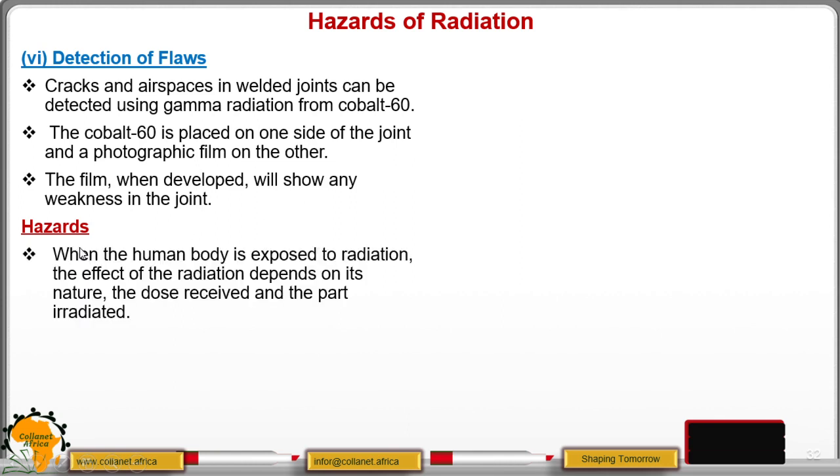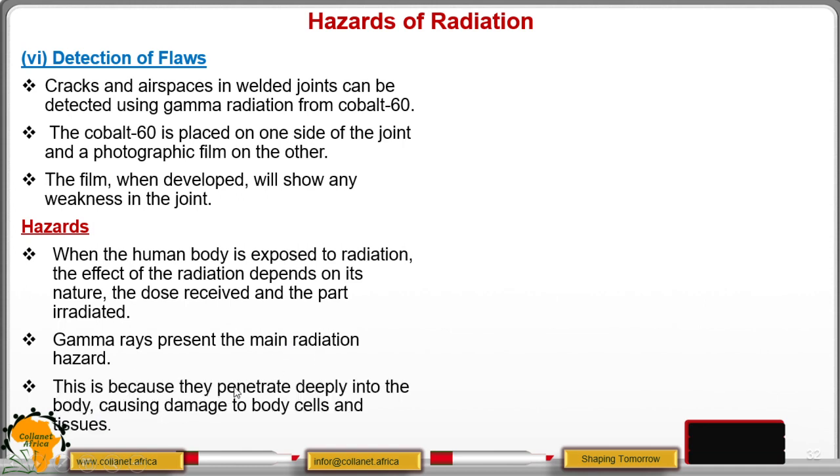Then we move to the hazards. When a human body is exposed to radiations, remember these radiations have high energy. They carry energy and they have high penetrating power. So when you expose your body to these radiations, they can kill even the useful cells. For example, the gamma radiations, we have seen that they penetrate through the flesh. They can kill those cells that are important, that are vital in your body. That way you may find that it may even cause cancer. Gamma rays present the main radiation hazard. This is because they have high penetrating power or they penetrate deeply into the body, causing the damage to the body cells and tissues.